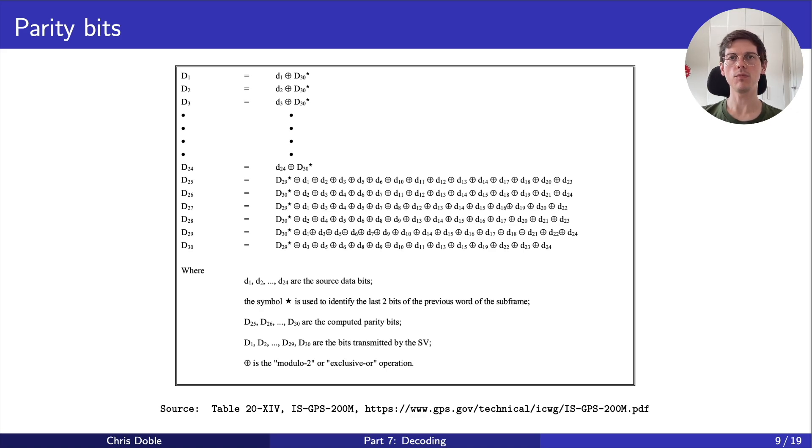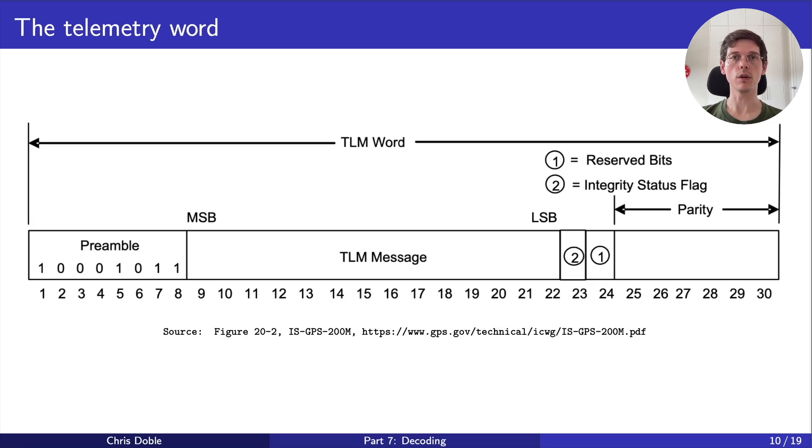But how do we know which subframe to decode if there are five different types? Luckily, the first two words of each subframe are always the same, and they give us the information we need. We've already seen the first, the telemetry word.